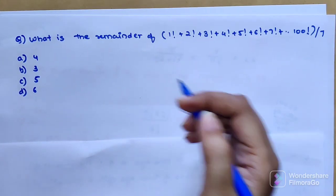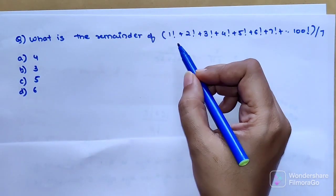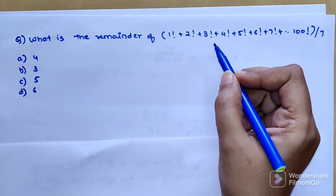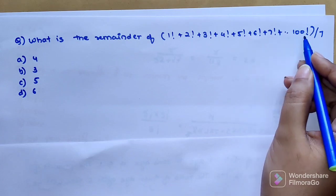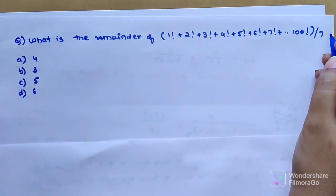The question is: what is the remainder of 1! + 2! + 3! + 4! + 5! + 6! + 7! going on up to 100! divided by 7?